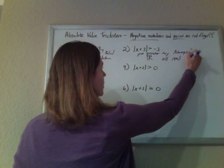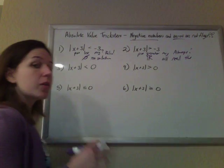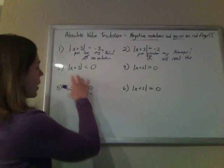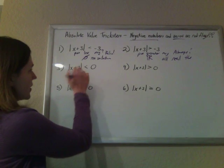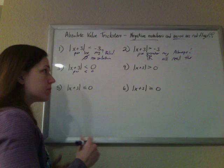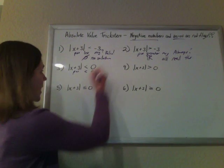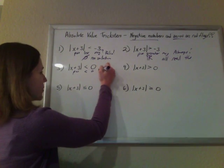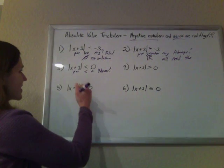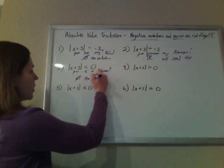All real numbers. Now, the zero gets a little bit trickier. Take a look at this one. This is a positive number being less than zero — never. That's never, ever going to happen. Positive numbers are never less than zero, so this is still no solution.